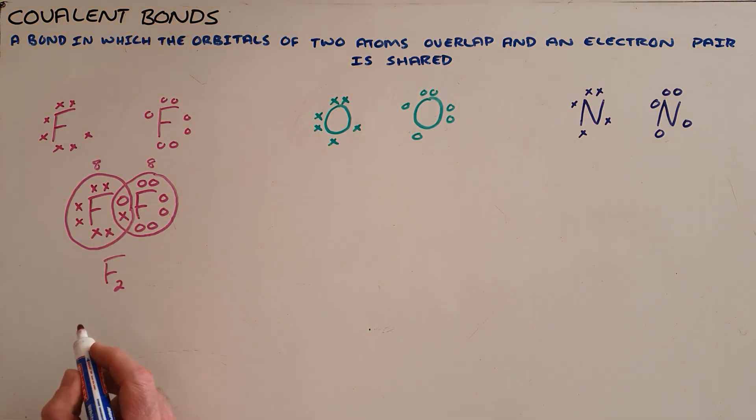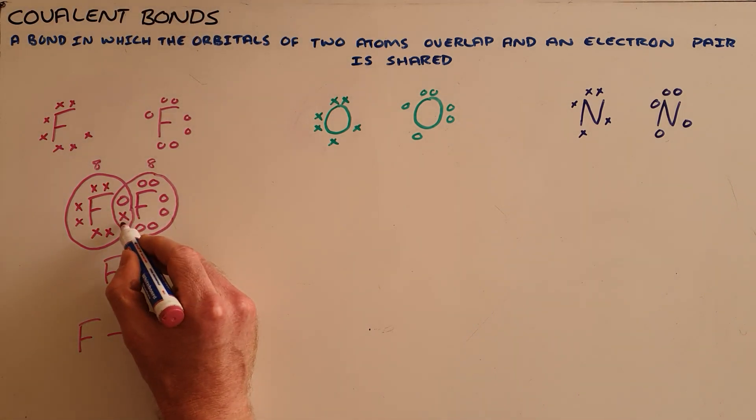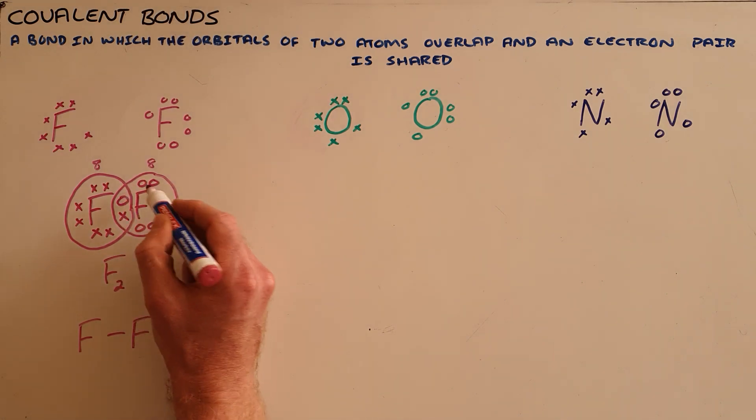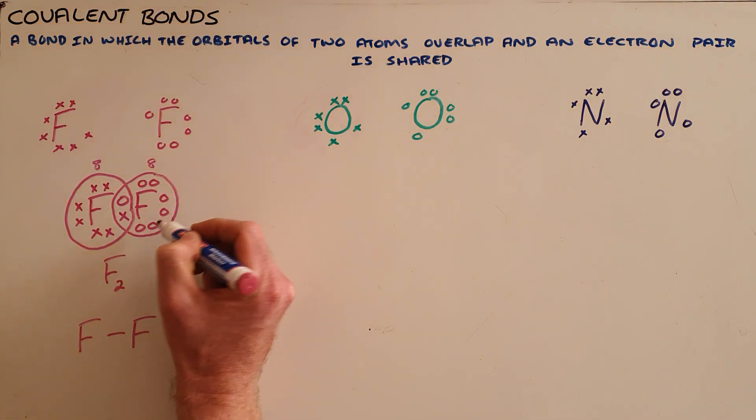This is the Lewis structure and the Cooper structure for this. We denote a single covalent bond with a single line to represent what is called the bonding electron pair, where each of these pairs are called lone pairs of electrons.